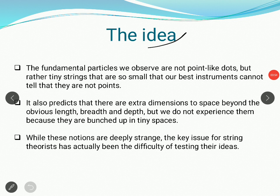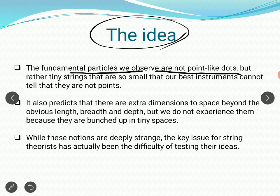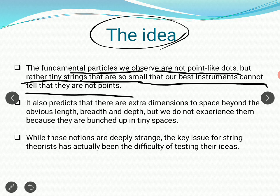If you look into the idea of string theory, the fundamental particles like electrons or quarks are not point-like dots but rather they are strings. They are so small that our best instruments cannot tell that they are not points. Even with the restriction in Heisenberg's uncertainty principle, we still see electrons and quarks as point particles, whereas in fact they might actually be strings.